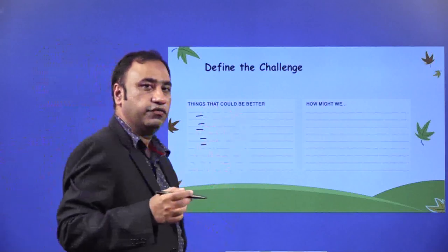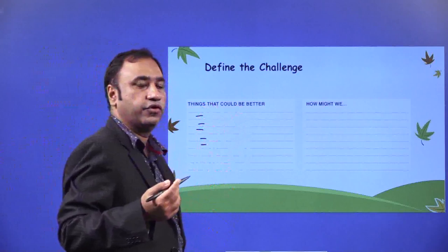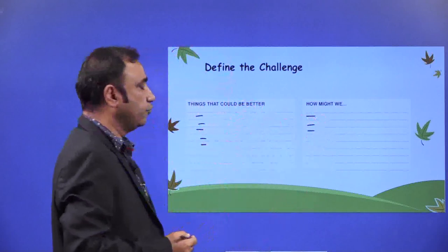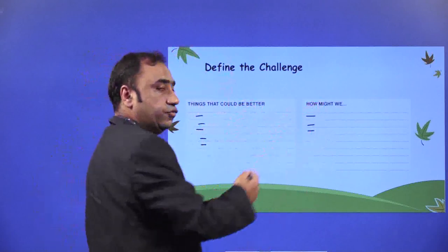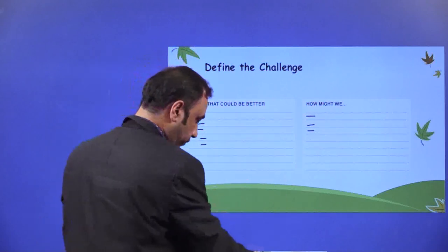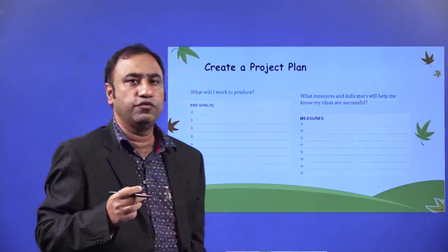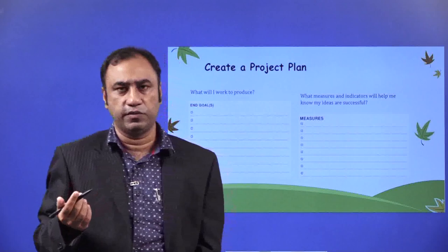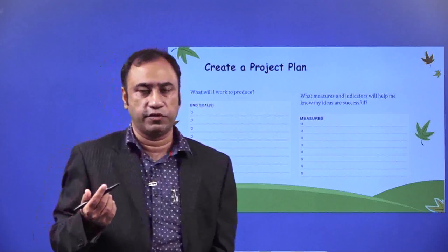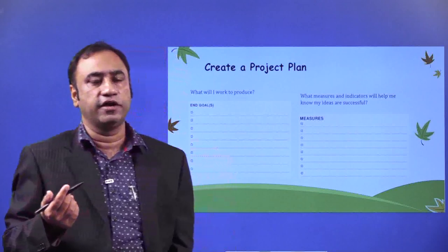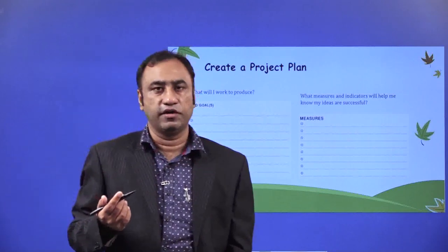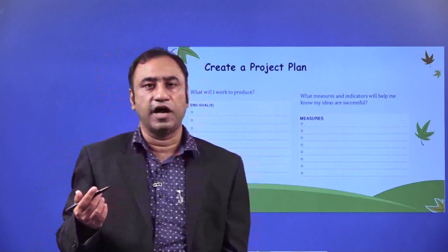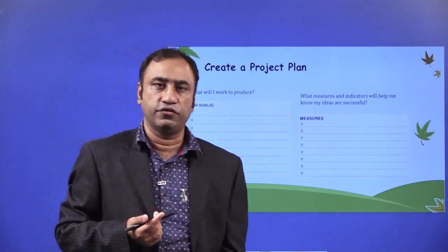List down all those things that could be better. User feedback is very, very important — it is the user who is going to give you the feedback. Once you have identified the things that could be better, think about how you might actually create a solution out of it. We need to move from understanding or observing a problem to defining a problem and then finding a solution. We are understanding the pain points of the user, and moving from that pain point to finding an unexpected gain state where the user goes from one state to the other.